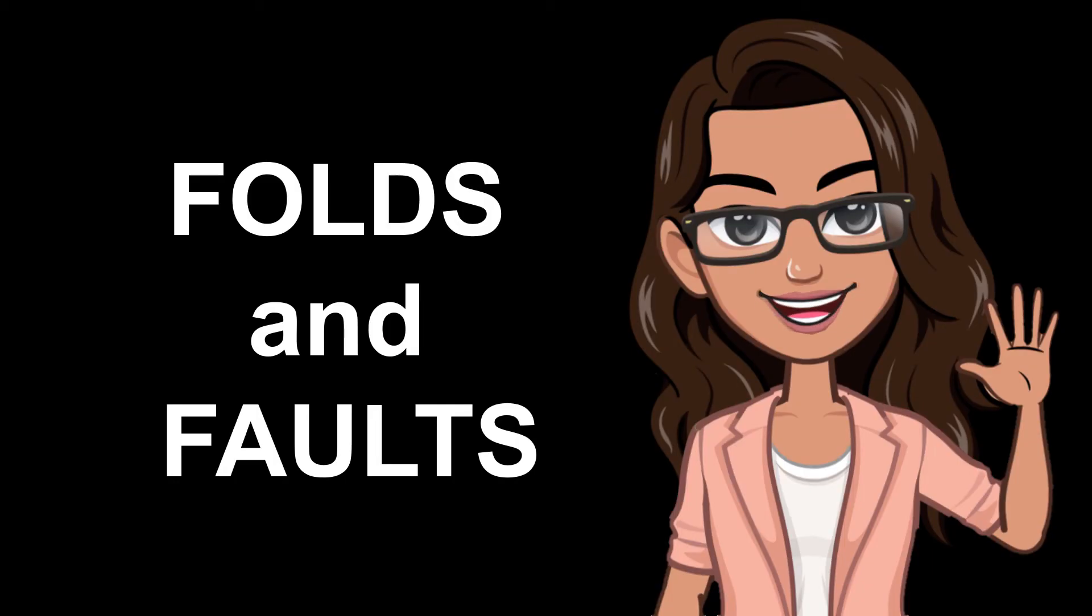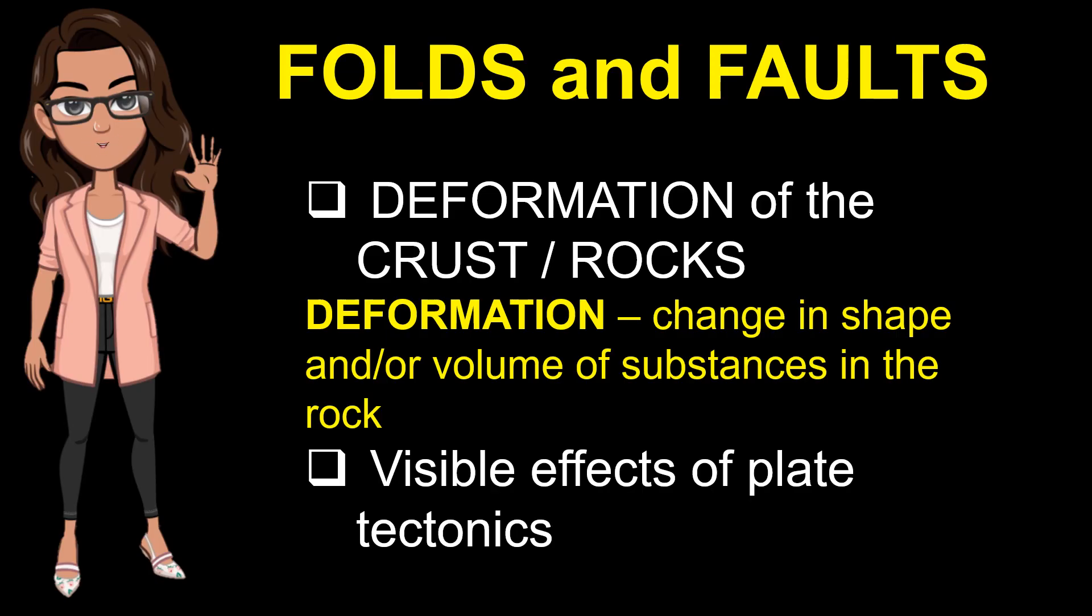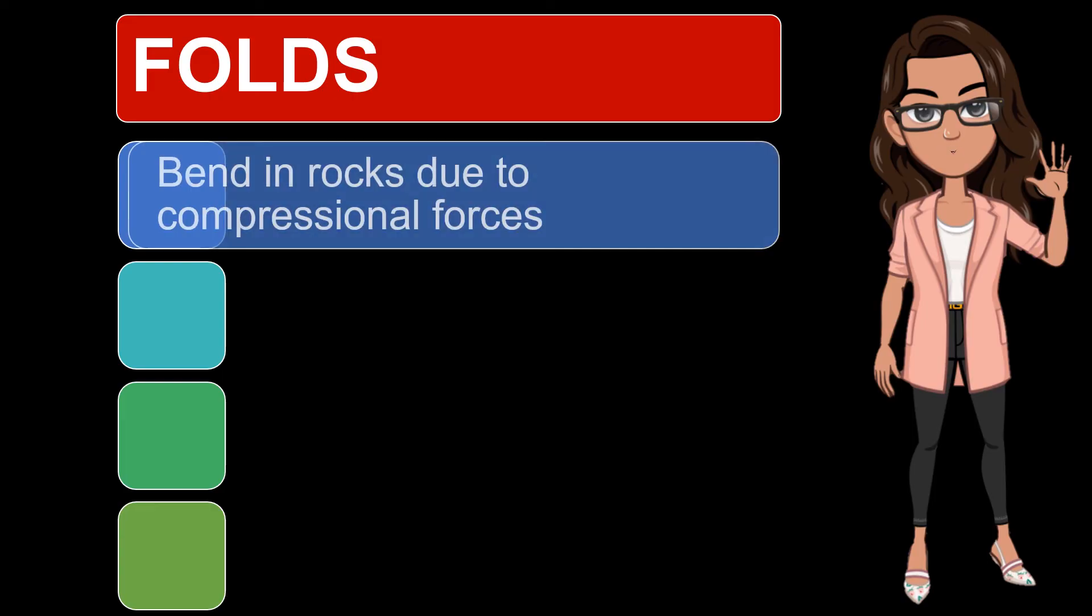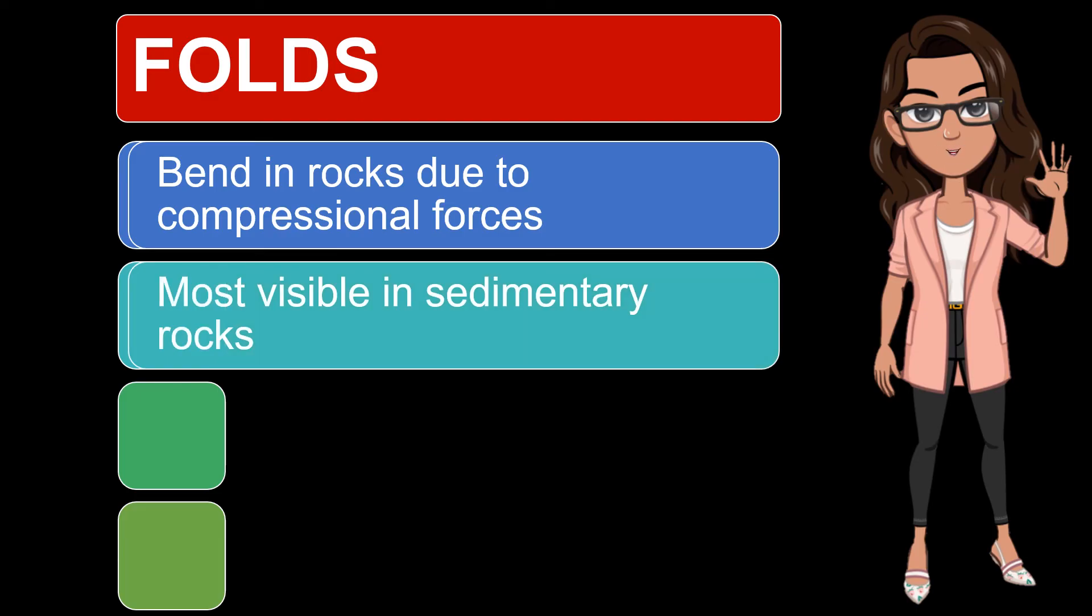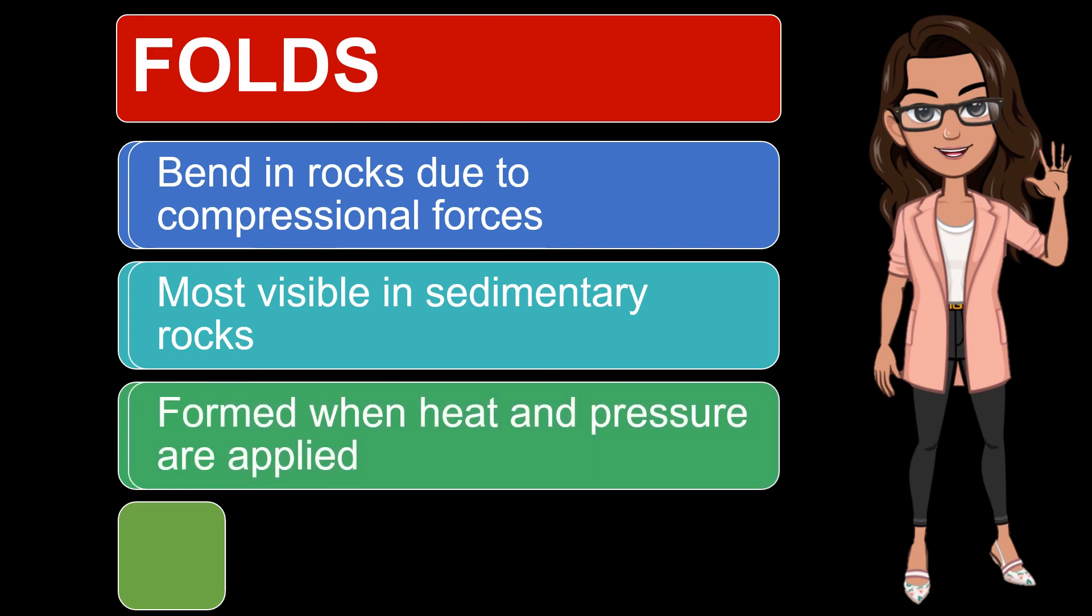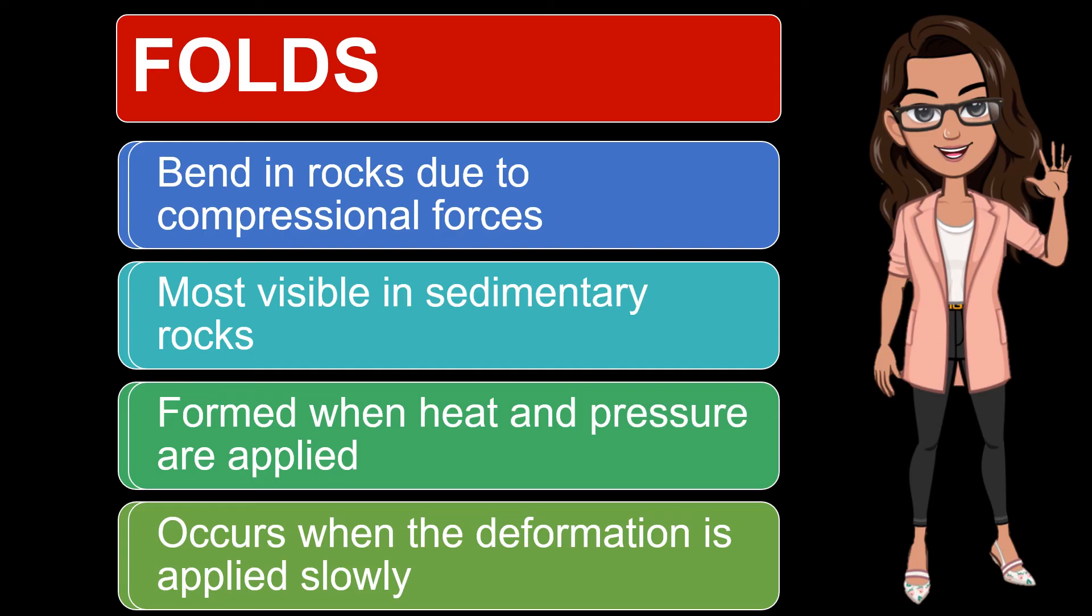Let's move on to folds and faults. These two geologic terms are both types of crust deformation. Deformation involves change in shape and/or volume of substances in the rock. Folds and faults are also visible effects of plate tectonics or movement of lithospheric plates. Folds are bends in rocks that are due to compressional forces. Compressional force occurs when a physical force presses inward on an object causing it to become compacted or squeezed. Folds are most visible in rocks that are layered, also known as sedimentary rocks. Folds are formed when heat and pressure are applied to the rock. The higher the temperature, the more pliable rocks become. Folds are more likely to occur when the deformation caused by the compression is applied slowly.